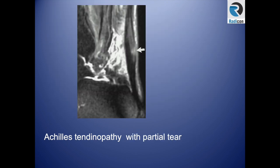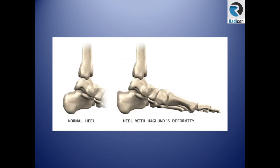This is a partial tear — non-insertional tendinopathy with a partial tear. Insertional tendinopathy is usually related to a bony abnormality called Haglund deformity, where there is a bony overgrowth at the posterior superior calcaneum. This prominence keeps hitting or causing friction with the adjacent Achilles tendon, causing local tendinopathy and inflammation.